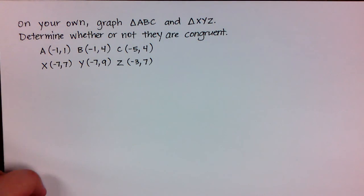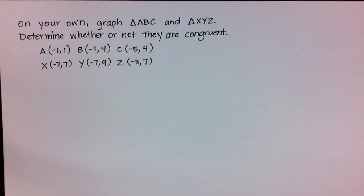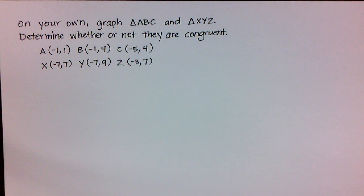I have one example for you to try on your own. I have two triangles for you — I want you to graph them, and then just as we did in the last example, test out by finding their distances and lengths, maybe using the distance formula, to prove if these are congruent by Side-Side-Side. If any sides are not congruent, then you've already proven that the two triangles themselves are not congruent.